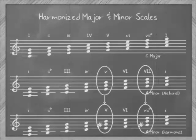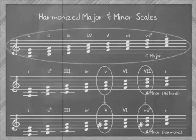And the harmonic minor is the same as the natural minor, except that the raised seventh degree changes the V chord from minor to major, and the seventh chord from major to diminished. Here's how they sound.